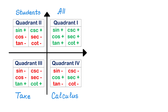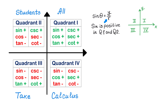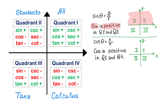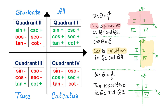Another way to memorize when sine, cosine, or tangent is positive: sine of theta is y over r, and because r is always positive, this function is positive when y is positive. We know that y is positive above the x-axis, which is quadrants 1 and 2. Cosine of theta is x over r, and this is positive when x is positive, which is to the right of the y-axis — quadrants 1 and 4. Tangent of theta is y over x, and it is positive when both y and x are positive or both are negative, which happens in quadrant 1 and quadrant 3.